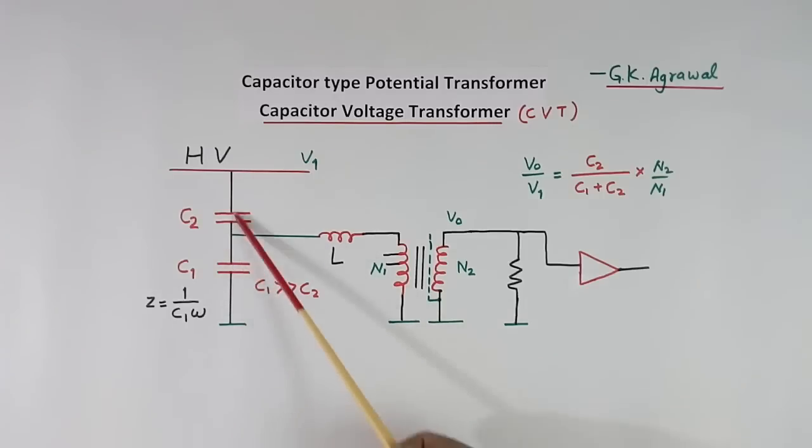There are two capacitors, C1 and C2. The value of C1 is very high compared to C2.